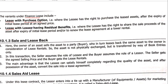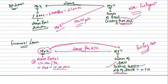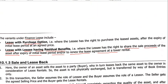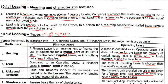The second variant: lease with lessee having residual benefits, where the lessee has the right to share the sale proceeds of the asset after the expiry of the initial lease period and to renew the lease agreement. Mr. X returned the asset to Mr. Y, but says: since your money is recovered and the asset's life is over, when Mr. Y sells the asset for say 5 lakh, Mr. X claims a share because he used it, maintained it, and his care is the reason the asset fetched 5 lakh in resale.